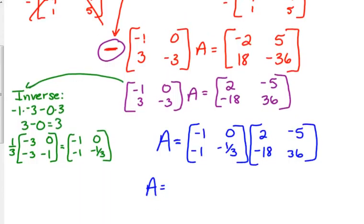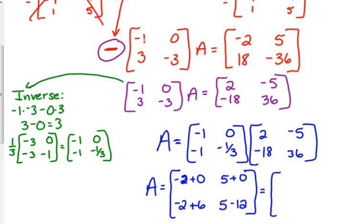A little bit of practice here with matrix multiplication again. We've got negative 2 plus 0, 5 plus 0, negative 2 plus 6, 5 minus 12. Kind of skipped a step there. I hope everybody's okay with that. If you need to write it out more, that's fine. Then, final step of simplifying. Add those numbers. That should be the answer.